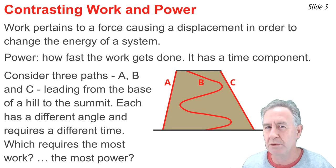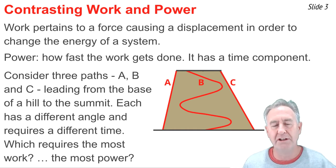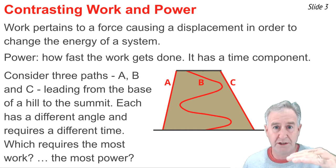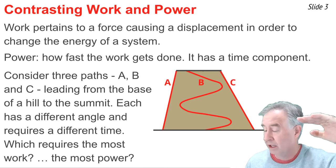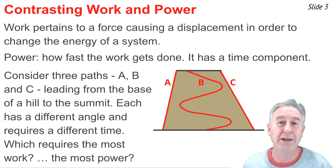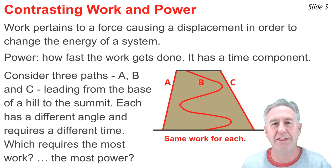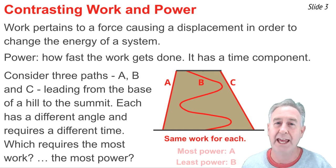Now, when we think about the question of which requires the most amount of work, we have to think in terms of energy. All three paths lead from the potential energy of the base to the potential energy of the summit, and as such, they each change the energy of the object by the same amount, and so they each require the same amount of work. But path A is done in the least amount of time, and path C in the most amount of time. So A is the path that requires the greatest power because it's the one that's done fastest, and path B has the least power.